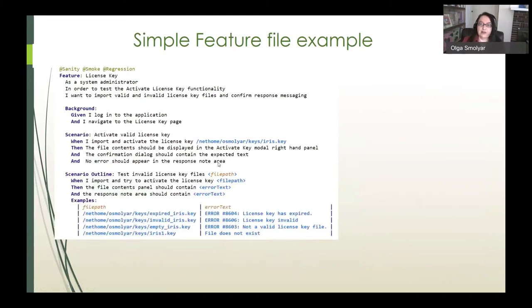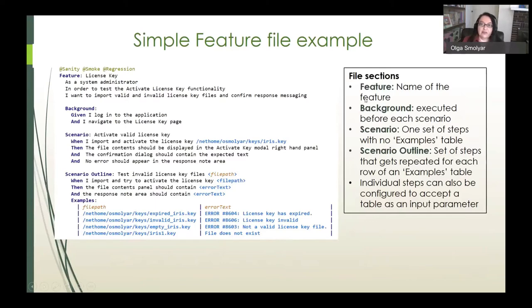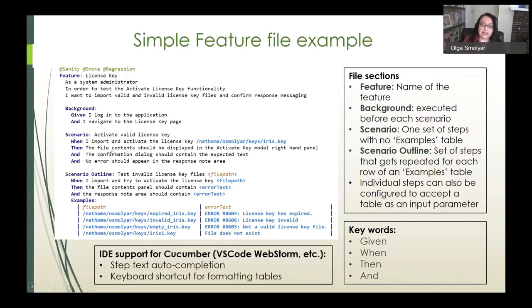This is a simple example of a feature file with standard sections. The feature provides the name of the feature and a free form description. The background section is optional and gets executed once before each scenario, where a scenario is basically a test. It's one set of steps with no examples table, whereas a scenario outline is a set of steps that gets repeated for each row of an examples table, like a for loop. The keywords given, when, then, and and are used to provide logical flow for the scenarios. Additionally, most IDEs have plugins that support Cucumber with step text autocompletion and very useful keyboard shortcuts for formatting tables.